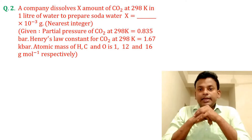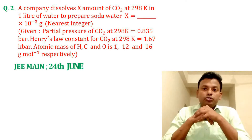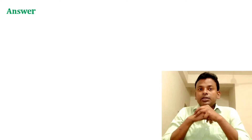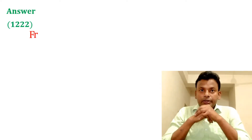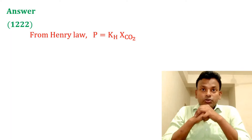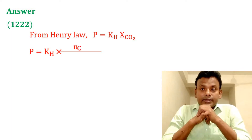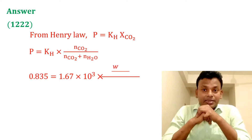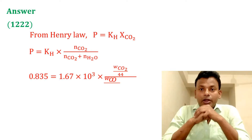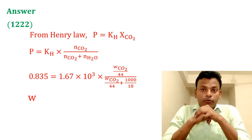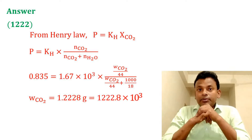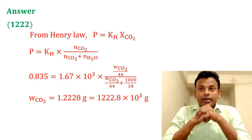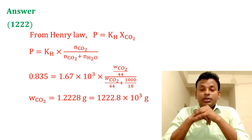This question was set in JEE Main 24th June 2022 evening shift. Answer is 1222. Using Henry's law: P = K_H × x_CO₂, and P = K_H × (n_CO₂)/(n_CO₂ + n_H₂O). Putting in all values, w_CO₂ equals 1.228 gram, that is 1222.8 × 10⁻³ gram. Answer is 1222.